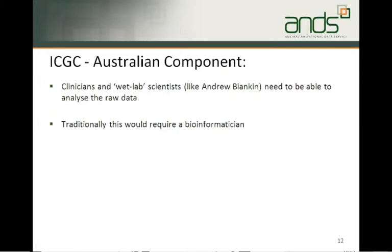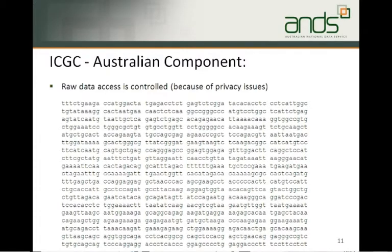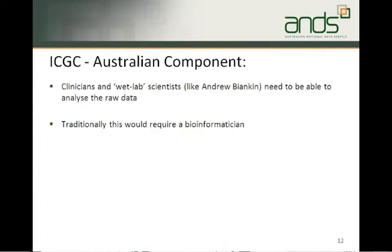The broad mutations shown a couple of slides back are called by an algorithm that runs through the sequence and predicts certain mutations of certain known types. But what scientists working on this really need is to be able to actually analyse the raw data themselves — to identify other mutations, various rearrangements, and so forth. It's the wet lab scientists and clinicians who would like to be able to analyse that raw data. Traditionally this would have definitely required a bioinformatician, because a lot of the analysis of raw DNA sequence needs to be done with scripts and various tools.